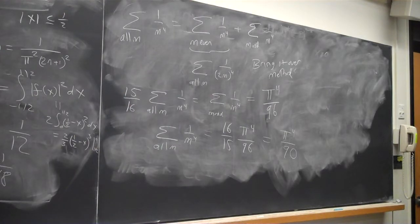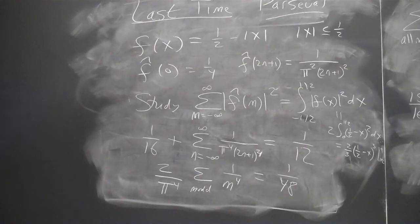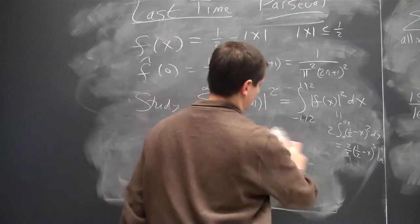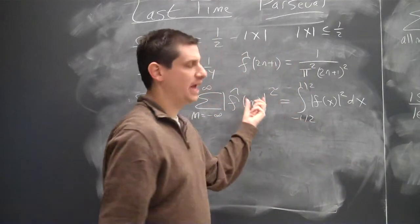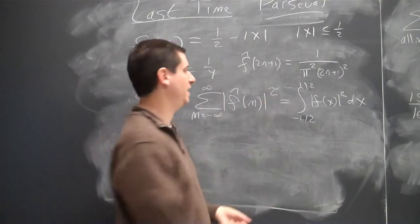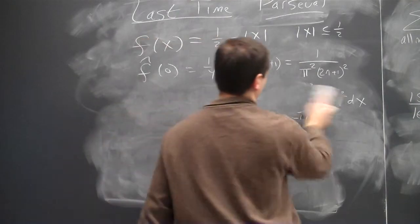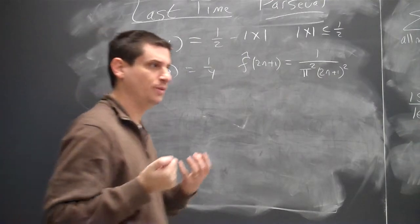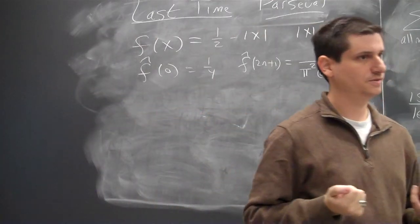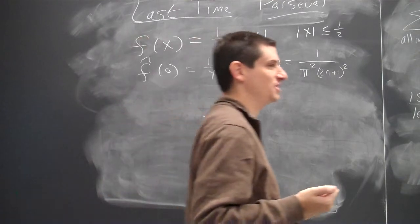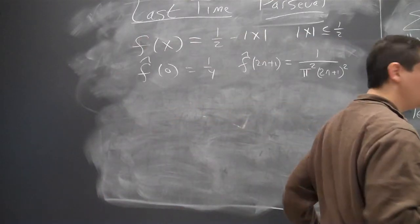So instead of studying the sum of f-hat to the 4th, what should we study instead? If we study the sum of f-hat squared, we get something to the 4th power. What should we study instead? F-hat. So somehow we want to study f-hat and not squares. Can anybody give me an expression that involves f-hat but not f-hat squared? And the hint is we're using Dirichlet's theorem.